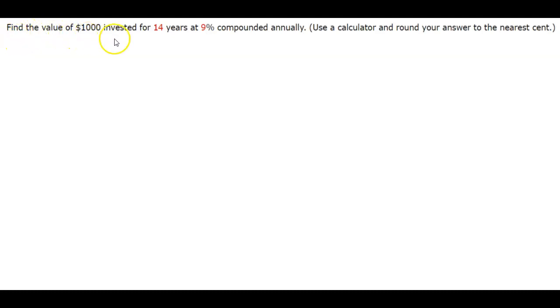Here we want to find the value of $1,000 invested for 14 years at 9% compounded annually, and then use a calculator and round your answer to the nearest cent.